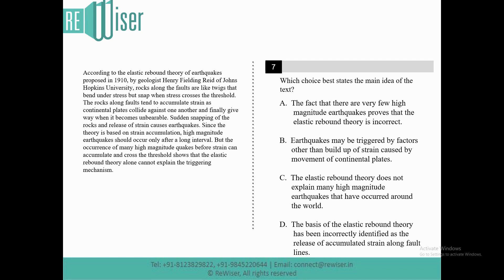According to the Elastic Rebound Theory of Earthquakes proposed in 1910 by geologist Henry Fielding Reed of Johns Hopkins University, rocks along the fault are like twigs that bend under stress but snap when stress crosses the threshold. The rocks along the faults tend to accumulate strain as continental plates collide against one another and finally give away when it becomes unbearable. Sudden snapping of the rocks and release of strain causes the earthquakes.